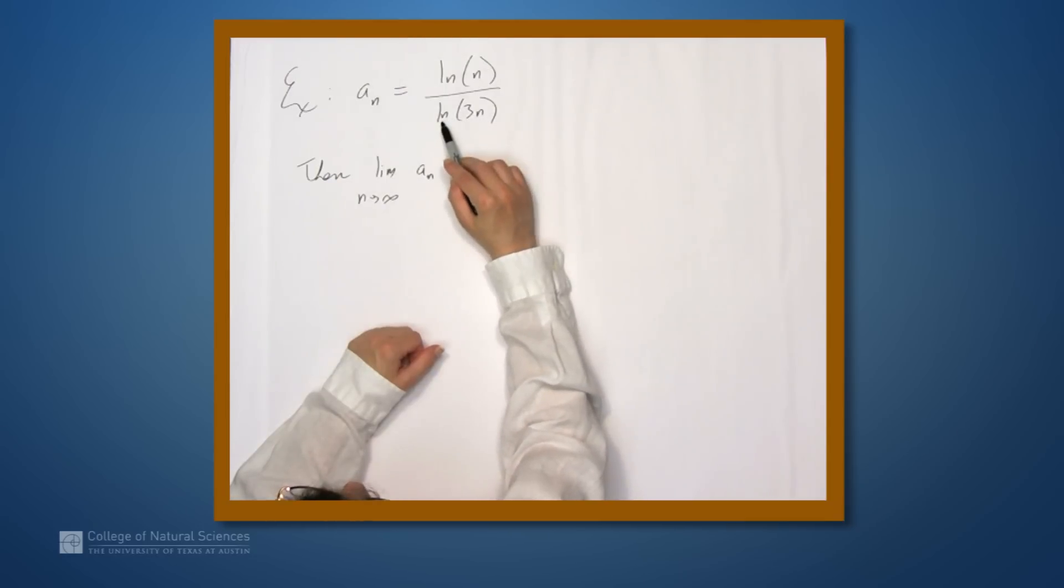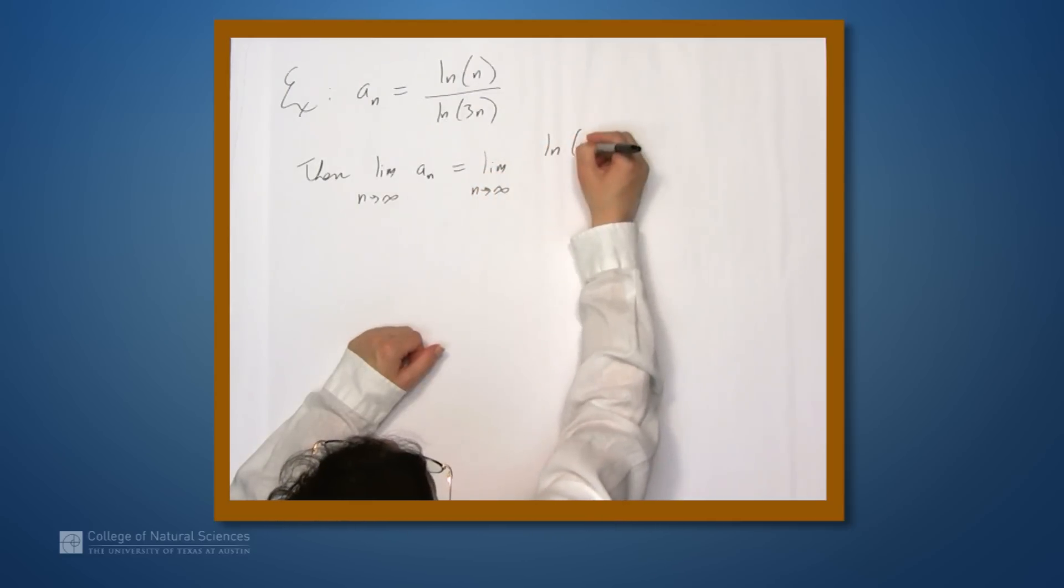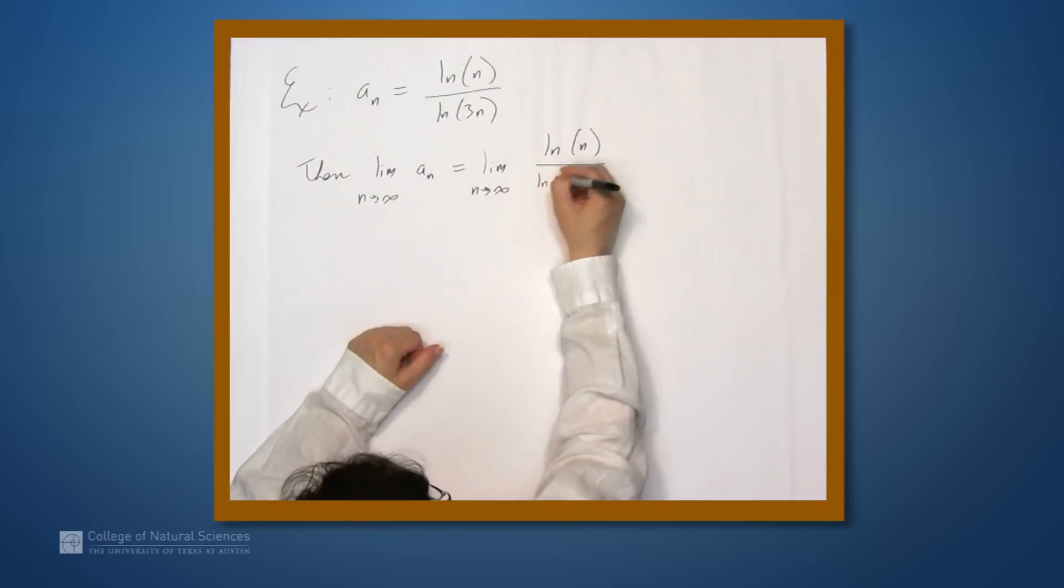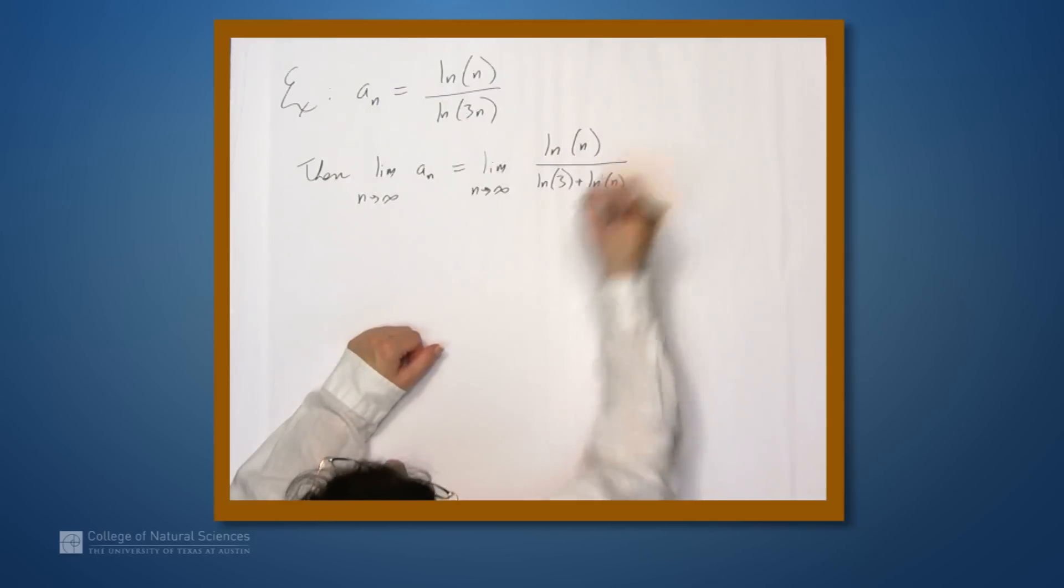And we have here natural log of 3n, so we can apply one of the laws for logarithms to rewrite the denominator as the natural log of 3 plus the natural log of n, right? Natural log turns multiplication inside into addition outside. So we get the natural log of 3 plus the natural log of n.